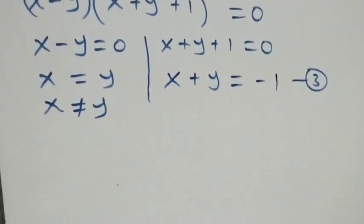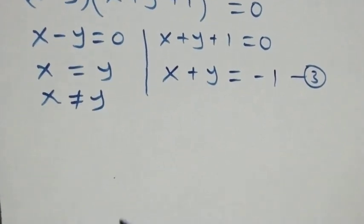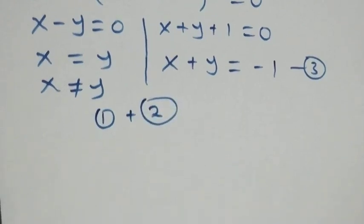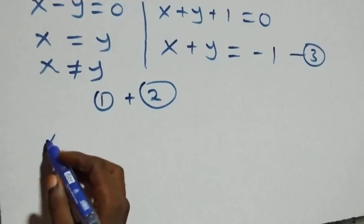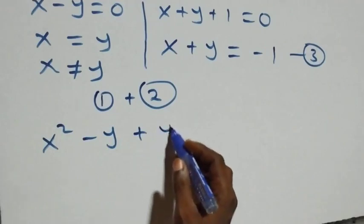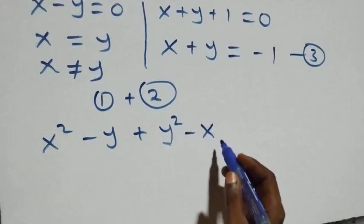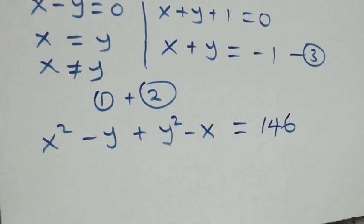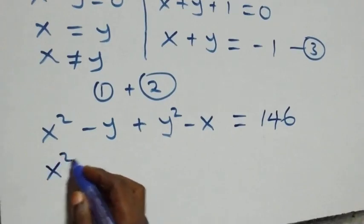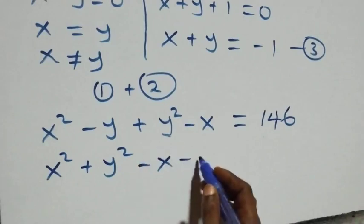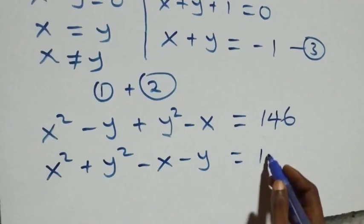Next, we add equation one and equation two. On the left-hand side we have (x² - y) + (y² - x). Bringing the squares together, we get x² + y² - x - y = 146.